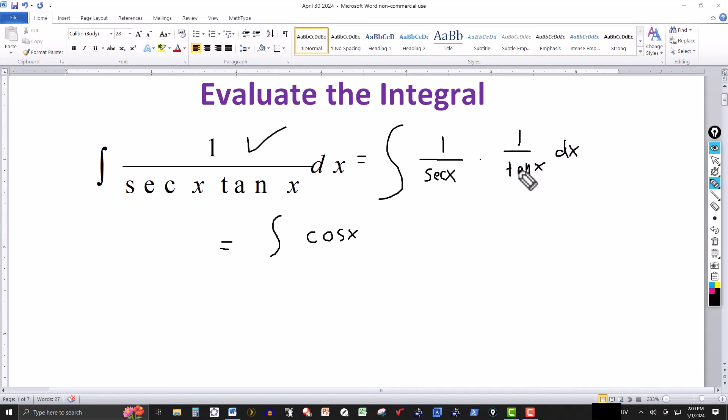Tangent and cotangent are reciprocals, so 1 over tangent of x can be written as cotangent of x. Remember that cotangent of x is the same thing as cosine of x over sine of x. So this is the same thing as cosine of x over sine of x.